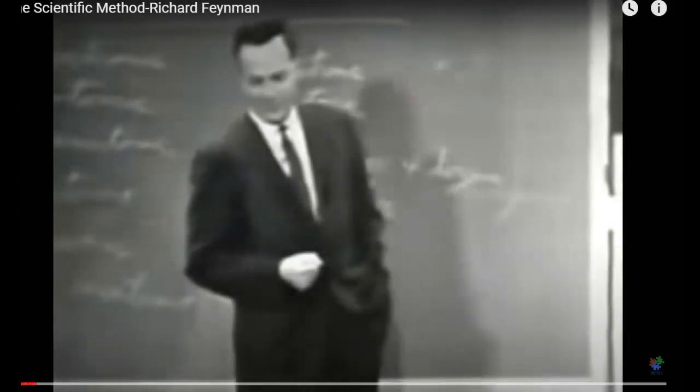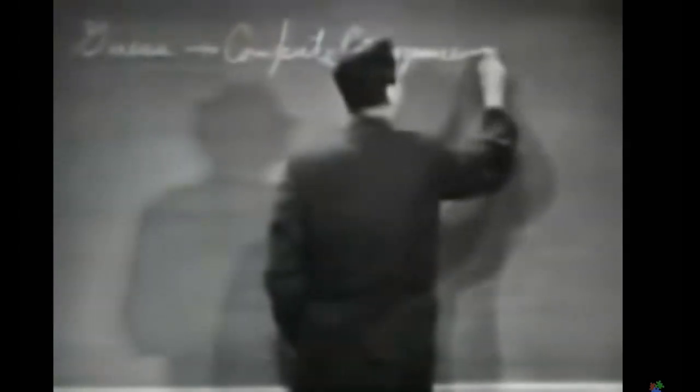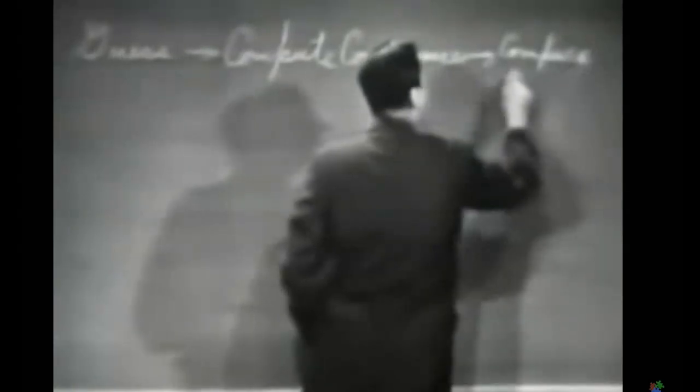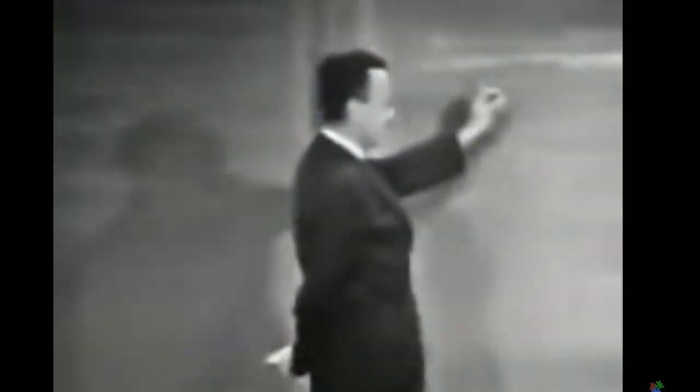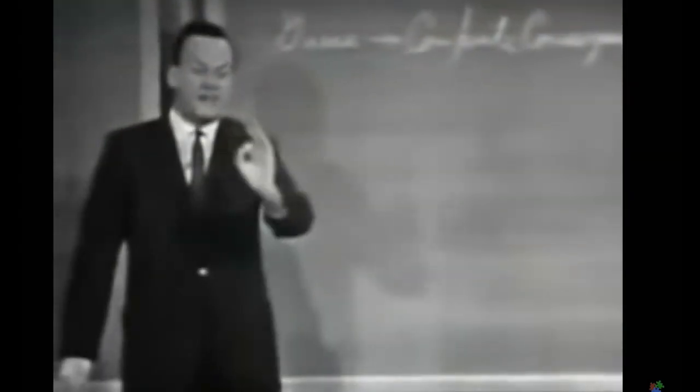Now I'm going to discuss how we would look for a new law. In general, we look for a new law by the following process: first, we guess it. Then we compute the consequences of the guess to see what, if this law that we guessed is right, it would imply. And then we compare those computation results to nature — or compare it to experiment or experience, directly with observation, to see if it works. If it disagrees with experiment, it's wrong. And that simple statement is the key to science. It doesn't make a difference how beautiful your guess is, or how smart you are, or who made the guess. If it disagrees with experiment, it's wrong. That's all there is to it.